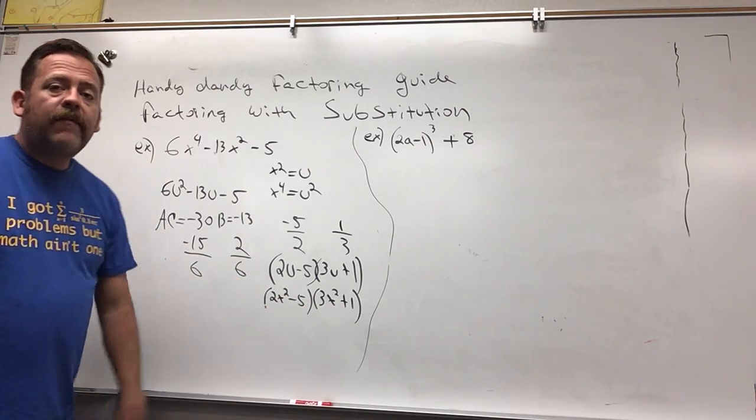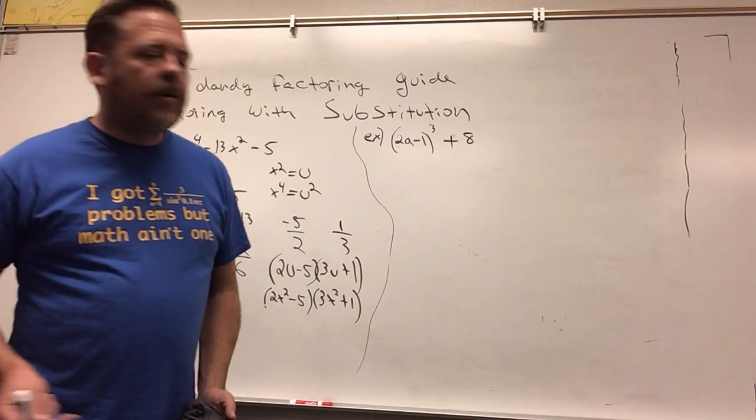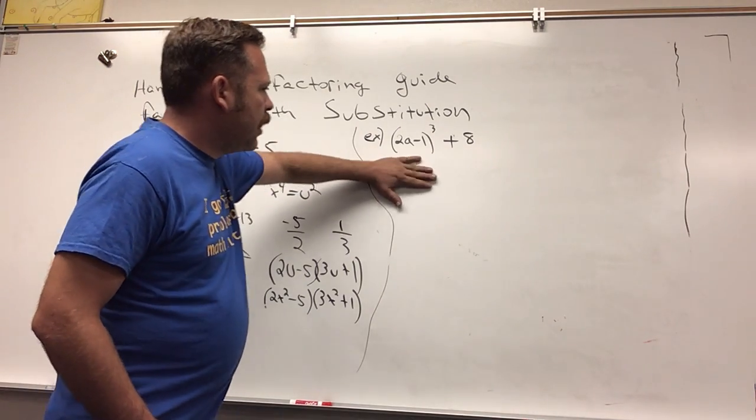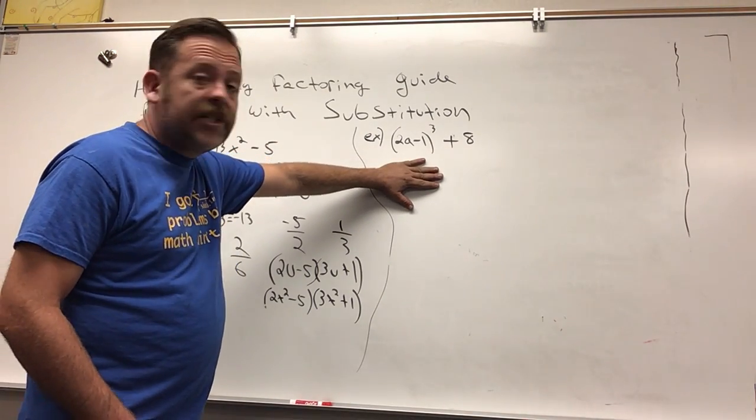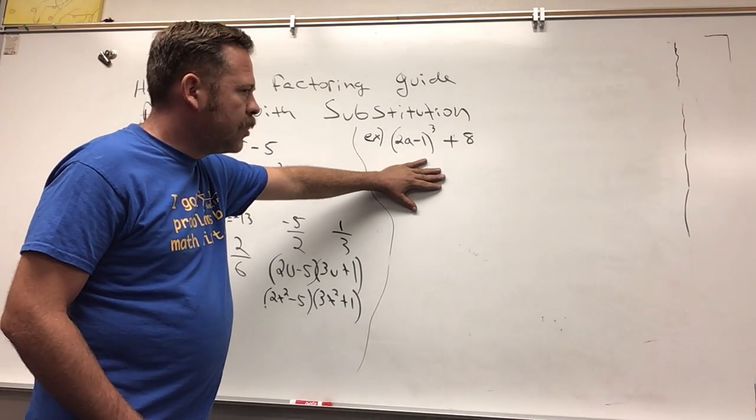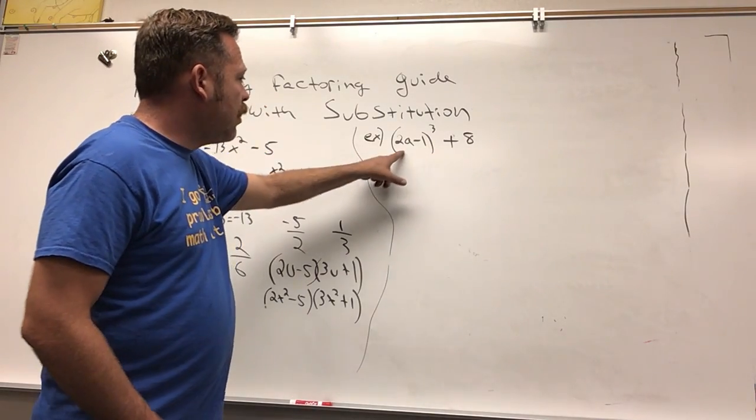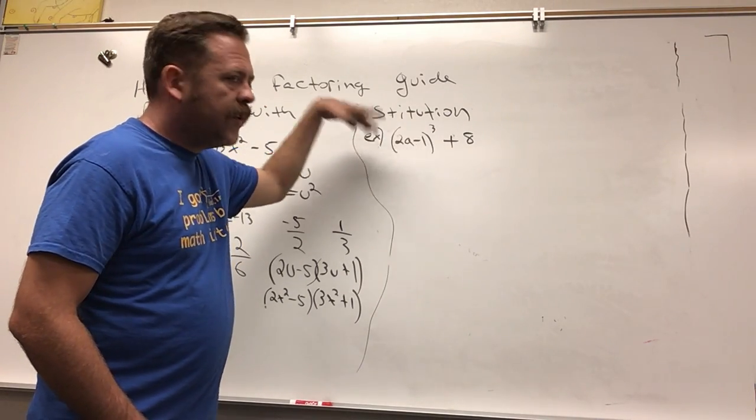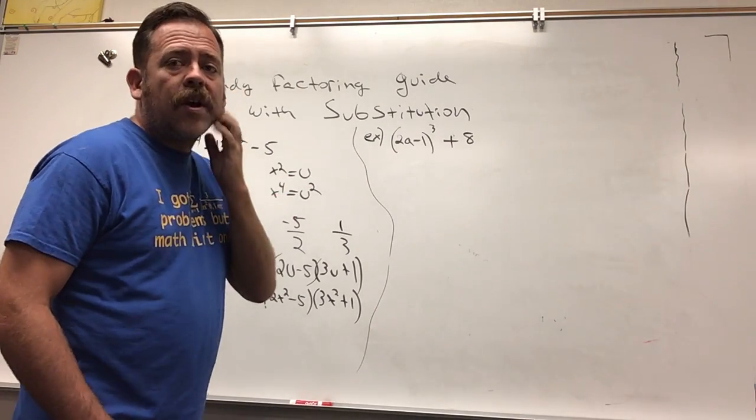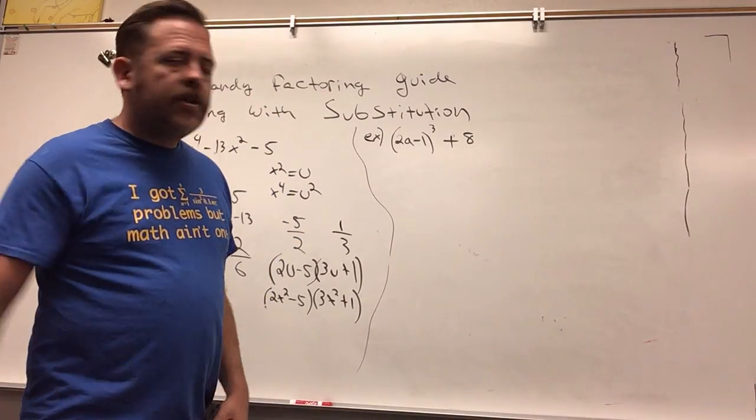This one here is going to be a little bit of a challenge. Look at this as a binomial and think of our binomial types of factoring. GCF, no. Difference of squares, no. Sum of cubes, it is! Plus eight's a perfect cube, and look, this is being cubed. If you take the cube root of it, it's 2a - 1, so this is a perfect cube. But it would get messy if you try to plug all of that into your formula, so we use substitution to help.